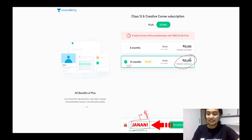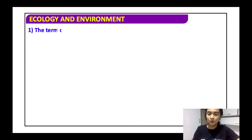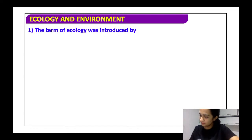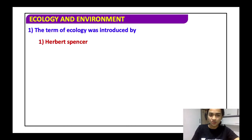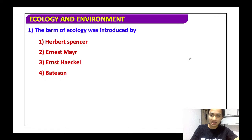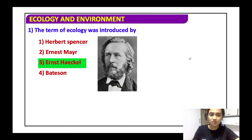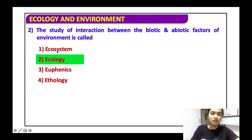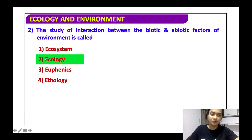Let's begin with the objective type questions on Organisms and Population, the first chapter in Unit Ecology. The term ecology was coined by Ernst Haeckel, who is also called the father of ecology. This is important from both objective and subjective points of view.